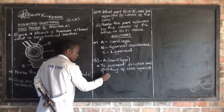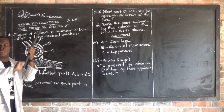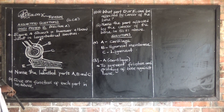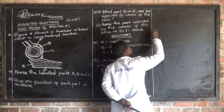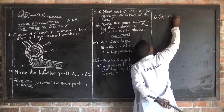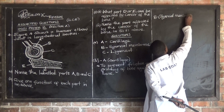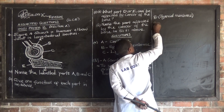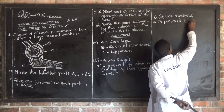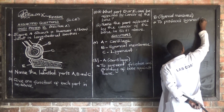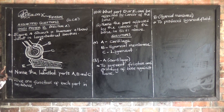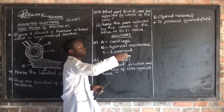Part B is the synovial membrane. The function of the synovial membrane is to produce — or secrete — synovial fluid. The part which produces the synovial fluid is the synovial membrane.